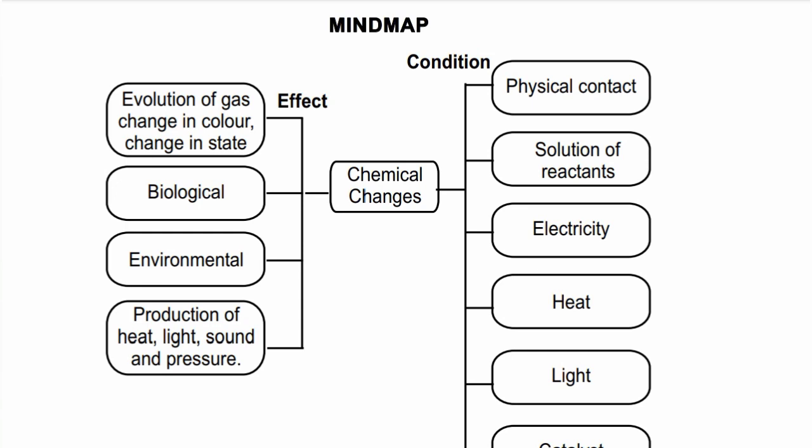Changes Around Us. What changes? Chemical changes. A chemical change is permanent and irreversible. In a substance, it will react and a new substance will form. In a product, it is a chemical change. In chemical changes, there will be conditions.